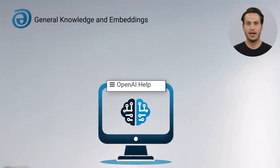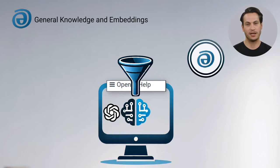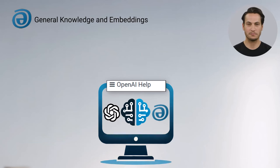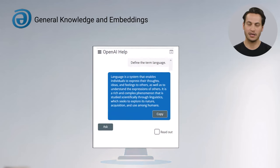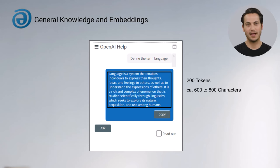All answers provided by the VLC OpenAI Help system are based on OpenAI's current general knowledge, plus the content embeddings of the respective VLC course. The OpenAI answers can be copied to the clipboard and are limited to 200 tokens, that is, approximately 600 to 800 characters.